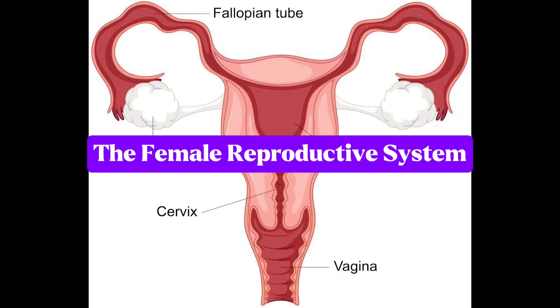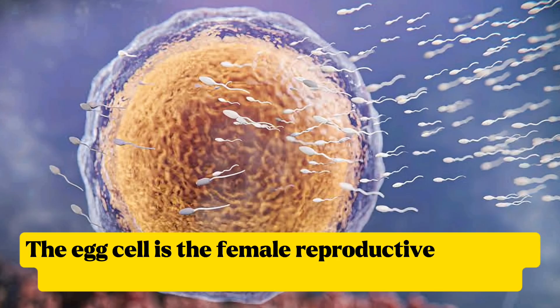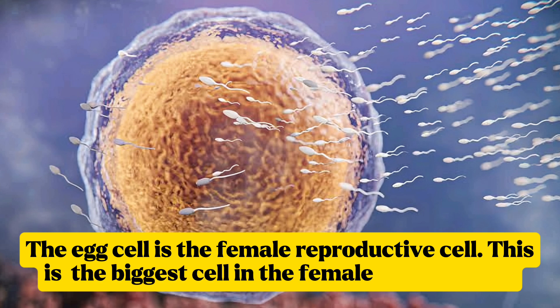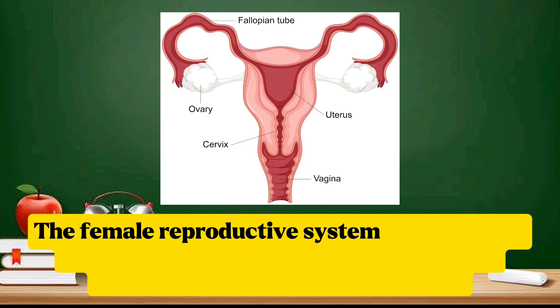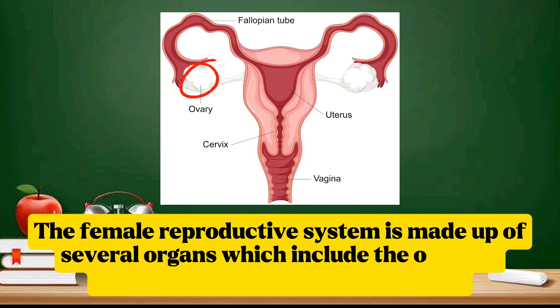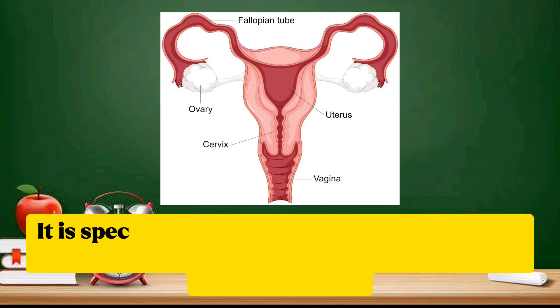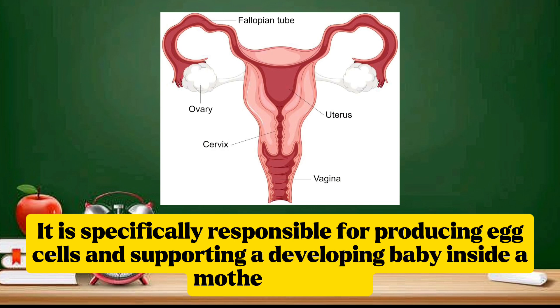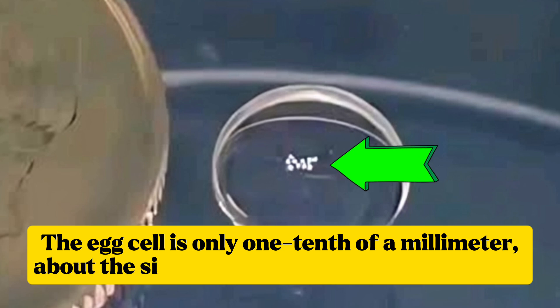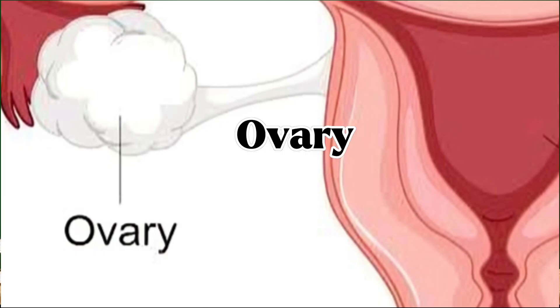The female reproductive system: the egg cell is the female reproductive cell and is the biggest cell in the female human body. The female reproductive system is made up of several organs including the ovaries, fallopian tubes, uterus, and vagina. It is responsible for producing egg cells and supporting a developing baby inside the mother's womb. The egg cell is only one tenth of a millimeter — about the size of the diameter of a hair strand.